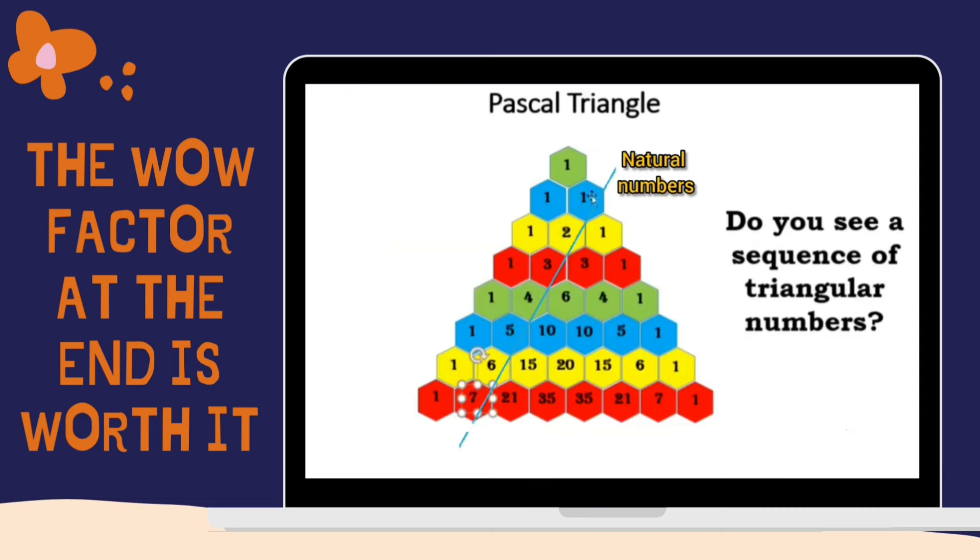And in this line, we found natural numbers like one, two, three, four, five, six, seven. And the one parallel to that, we found the triangular numbers. Yes. And the same thing in the other direction. Right? These were the two triangular number series.